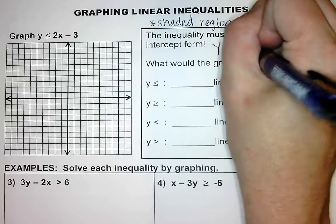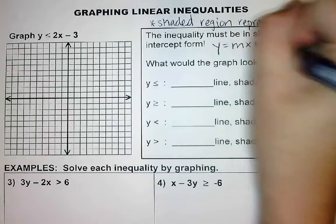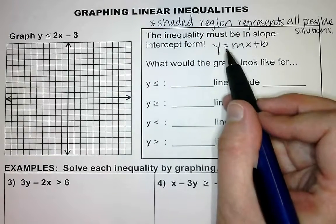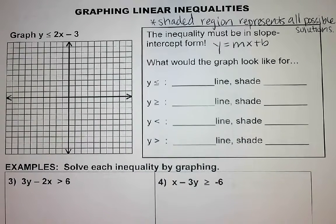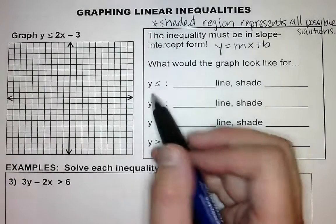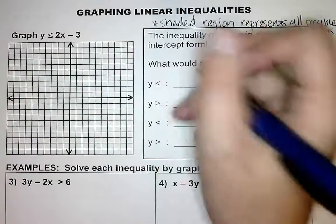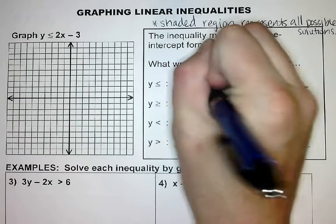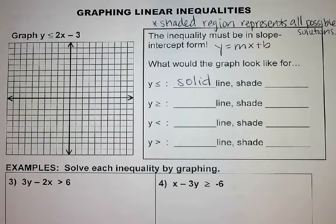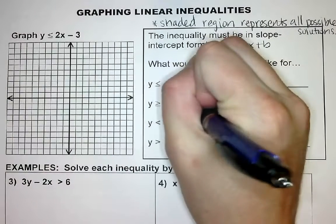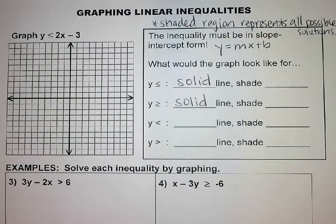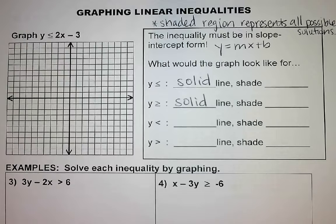Remember that y equals mx plus b, or y is greater than mx plus b, y is less than mx plus b. If my y is less than or equal to, then that means we will have a solid line. If it's greater than or equal to, it will also be a solid line.